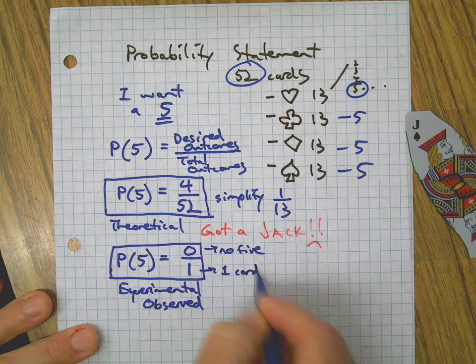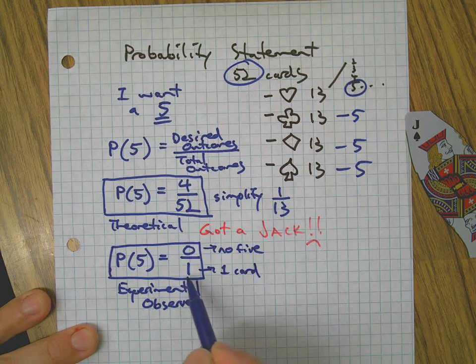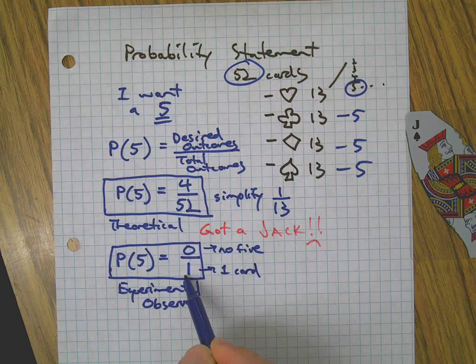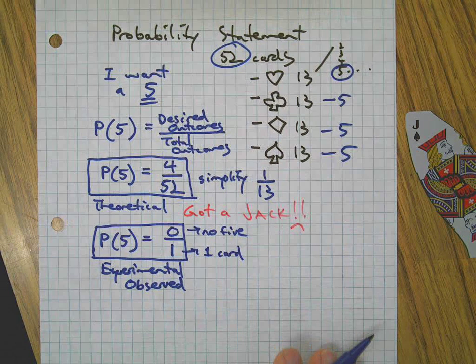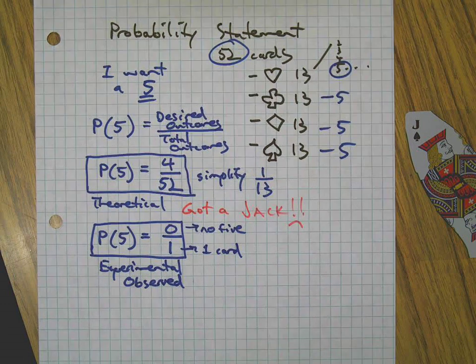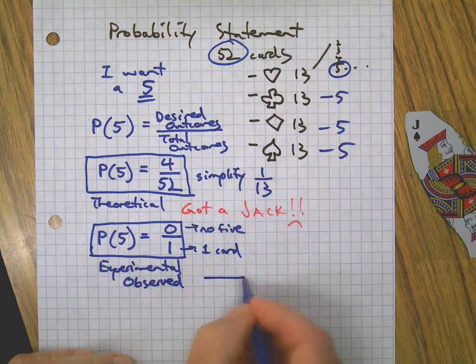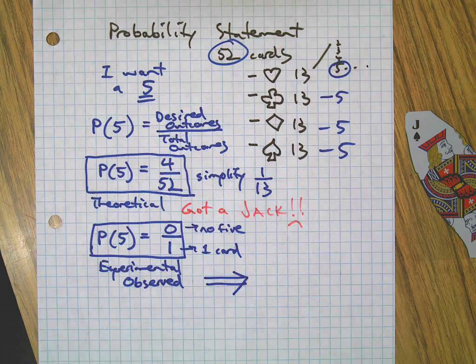And this means I looked at one card. So it changes. It's not 52 down here because I didn't turn 52 cards over, just one. So much different what you think versus what you observe. Now let's go through this cycle again.